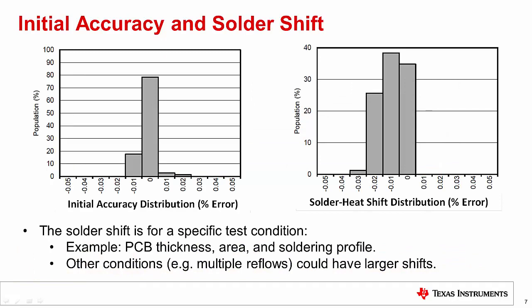This slide shows the histogram for initial accuracy, as well as the error introduced by solder shifts. The solder heat shift distribution error is caused by stress introduced in the die during the soldering process. This error is in addition to the initial accuracy error, and was measured under very specific test conditions such as PCB thickness, area, and soldering profile. Changing the soldering conditions can impact the solder shift; for example, many PCB designs will require more than one reflow for top and bottom sides, which can make the solder heat shift even larger.